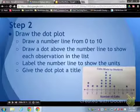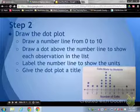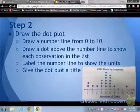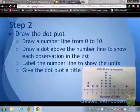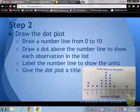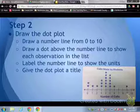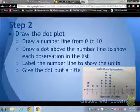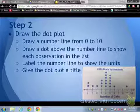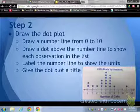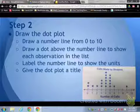So then on step 2, we can draw our plot. We know the number line can go from 0 to 10, and we have enough numbers for our data. Second thing on here is you draw a dot above the number line to show each observation in the list. So I did that here. Label the number line to show the units, so the numbers at the bottom are the number of calls, and then you need to give the dot plot a title. This is calls made by students.